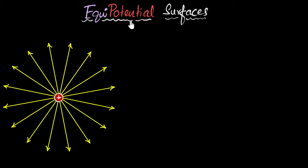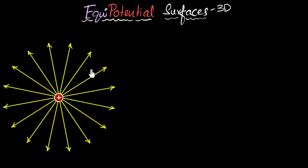So what exactly are these? Well, as the name suggests, these are three-dimensional surfaces over which the potential at every point is equal — equipotential surfaces. Let me give you an example. From this charge, if I go about two centimeters away, there will be some potential at that point. Let's call that 10 volts.